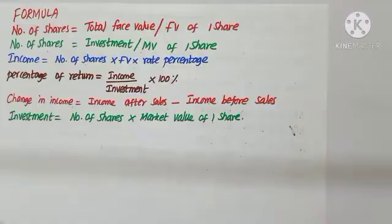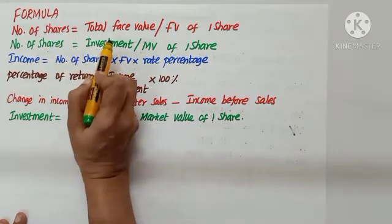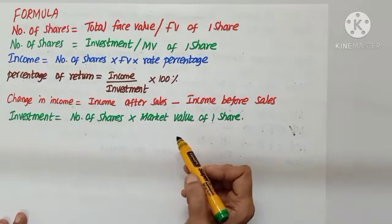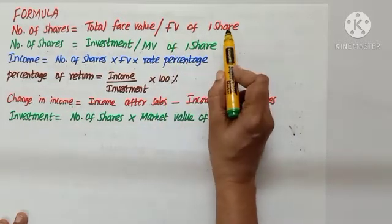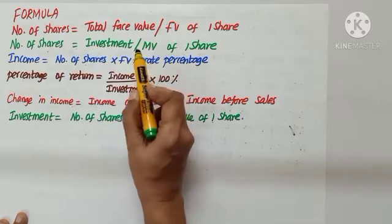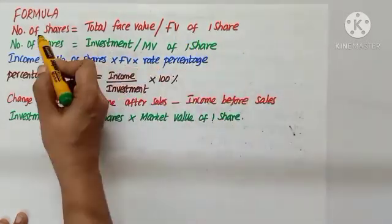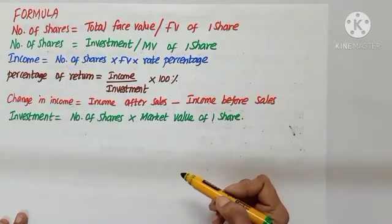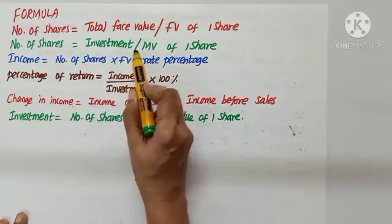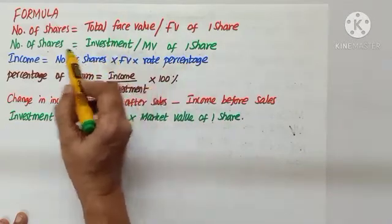Good morning children. Let us learn some formulas for better understanding of the problems. Number of shares can be calculated two ways. If they give you face value of one share, divide total face value by face value of one share. Also, you can divide investment by market value of one share. Both cases give us number of shares.